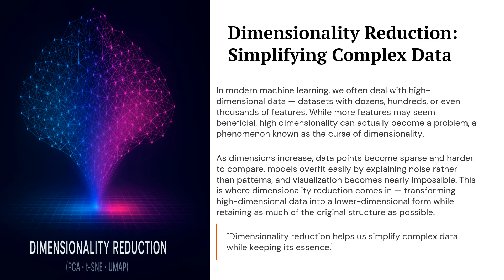In modern machine learning, we work with datasets that can have dozens, hundreds, or even thousands of features. Too many features may sound useful, but they often create problems. This is called the curse of dimensionality. When dimensions increase, data points become sparse and hard to compare. Models start overfitting because they learn noise instead of real patterns, and visualizing data becomes almost impossible. That is where dimensionality reduction helps — it transforms high-dimensional data into a lower-dimensional space while keeping the original structure as much as possible.